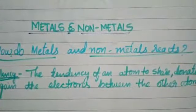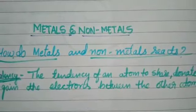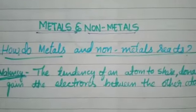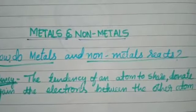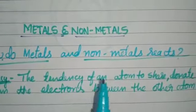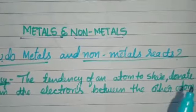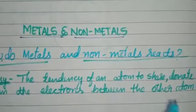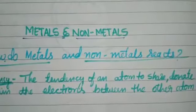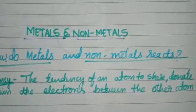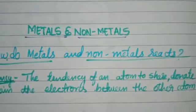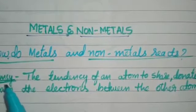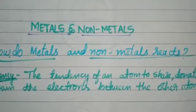Students, in Class 9 we have already learned what are valence electrons and what is valency. Valency is nothing but it is the tendency or combining capacity of an atom to share, donate, or gain electrons with another atom. We call this property valency.